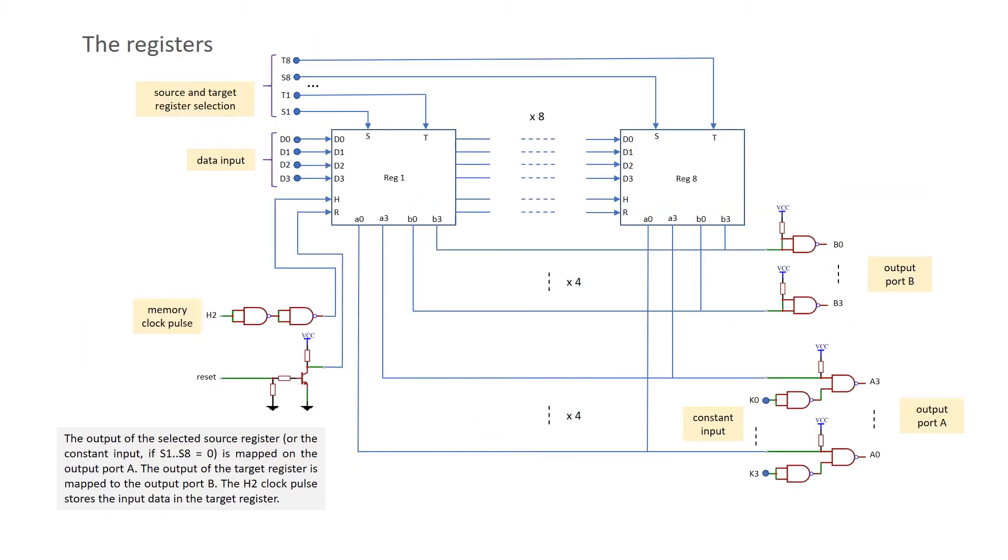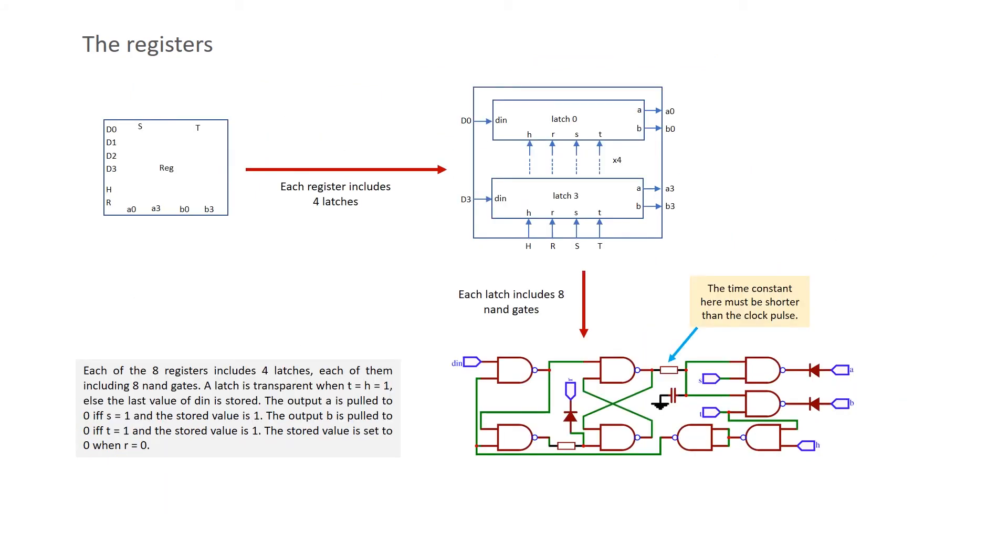Here is a simplified schematic of the memory unit. And here is the detailed schematic of a register. Each bit is stored in a latch made with four NAND gates. Two additional gates allow the value of the stored bit to be routed to one of the outputs A or B depending on the addresses of the source and destination registers. Two other gates make it possible to store the input data only when the register is the destination operand.